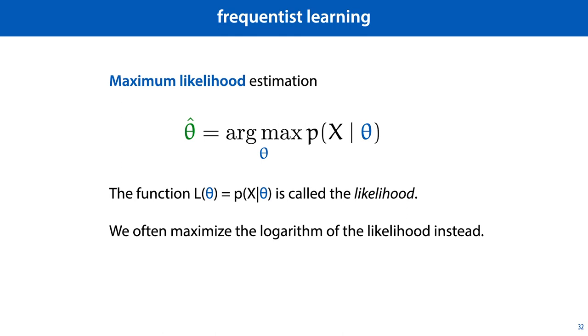When we express p(X|θ) as a function of theta, it is called the likelihood.